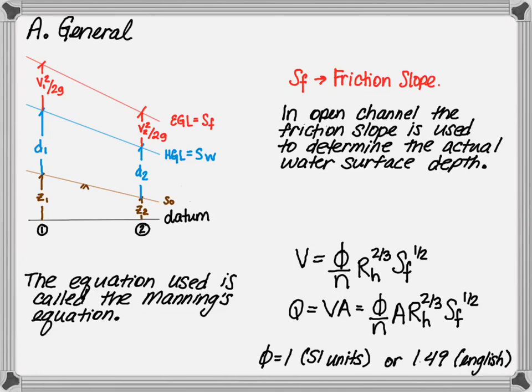Since flow rate is equal to velocity times cross-sectional area, the flow is equal to phi divided by roughness times cross-sectional area times the hydraulic radius to the two-thirds power, all multiplied by the friction slope to the one-half power.